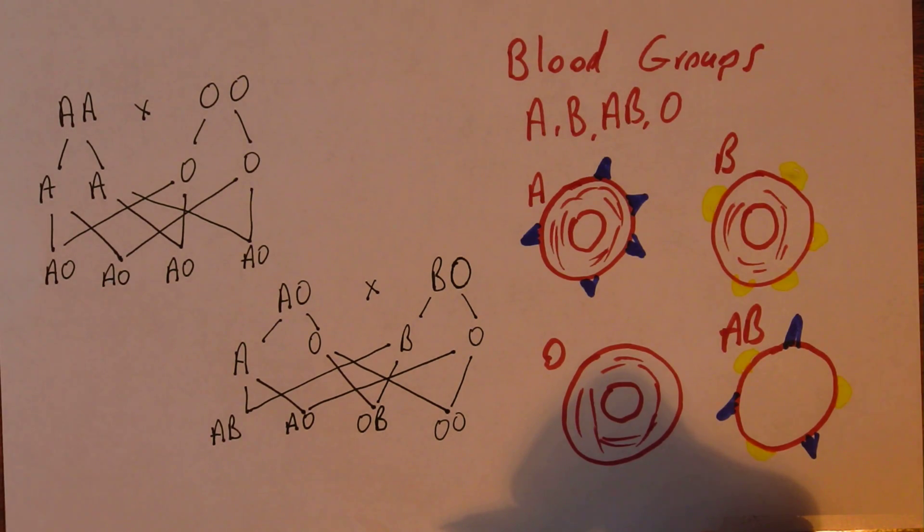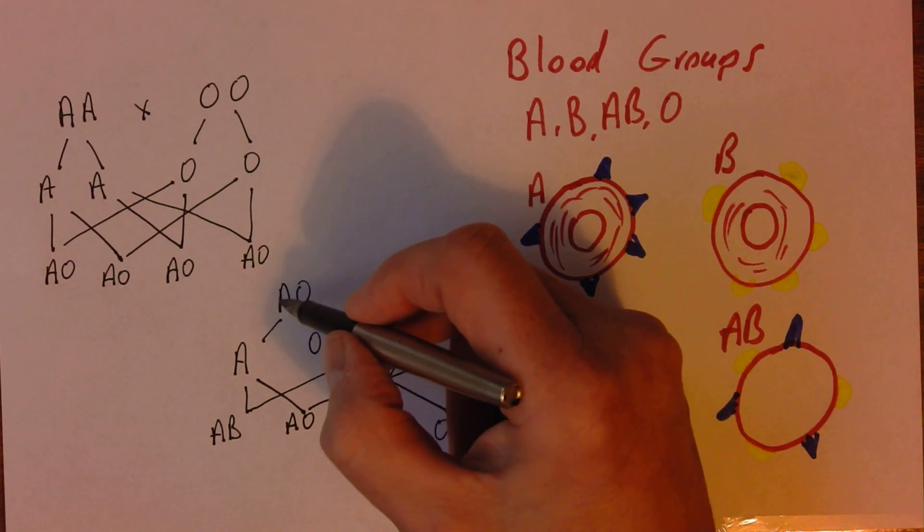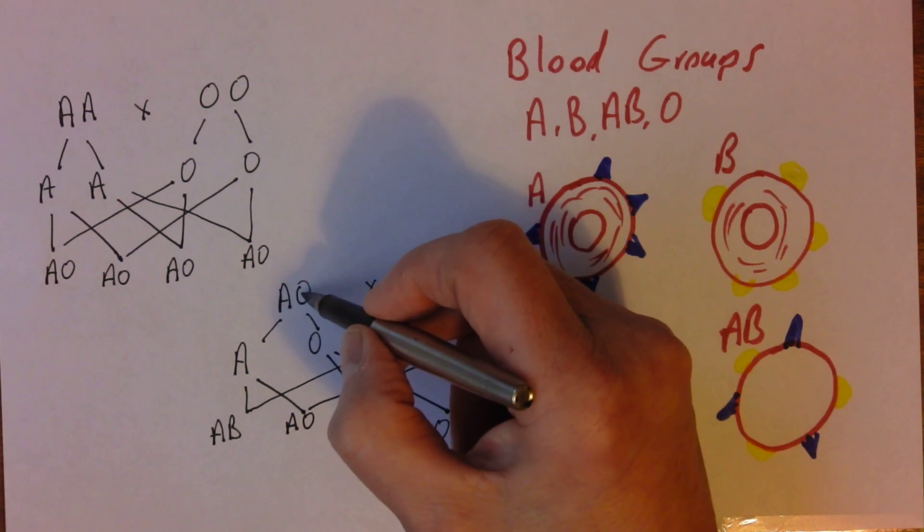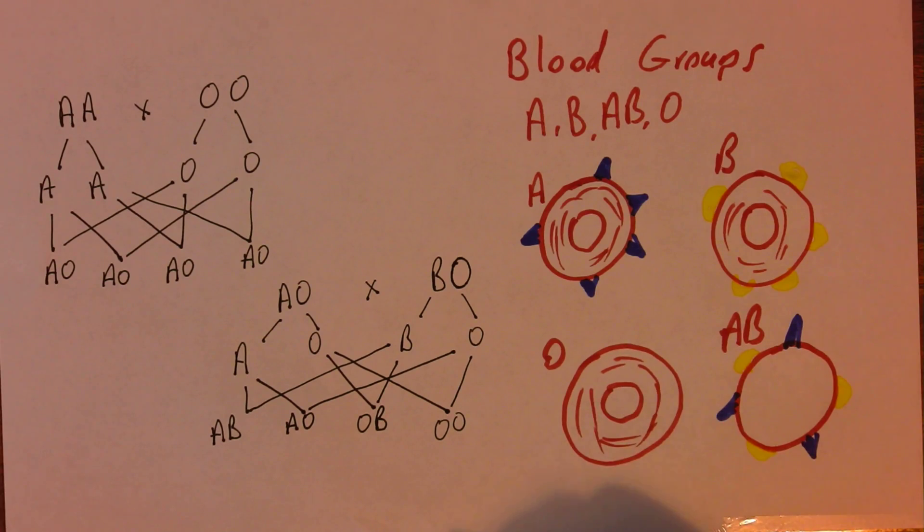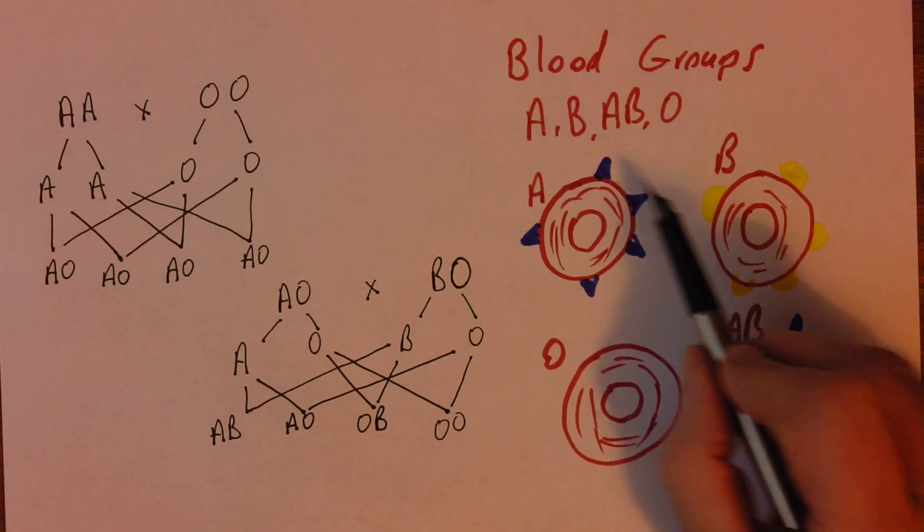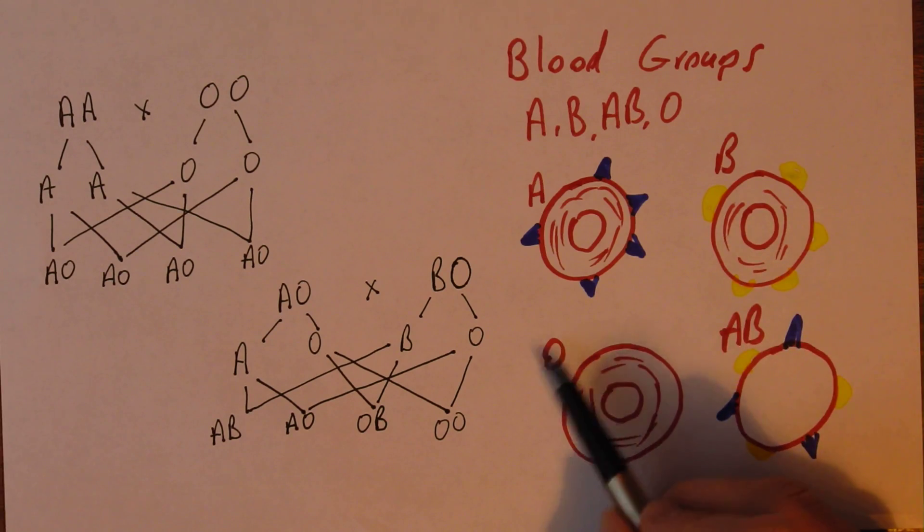So we can take any combination of A's, B's, and O's in the parents, and we can easily work out what potential phenotypes could come as a result of that. So remember the A and the B are co-dominant. It is the O that is recessive. And it is an autosomal form of inheritance.